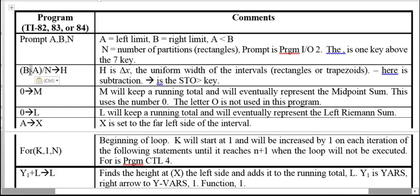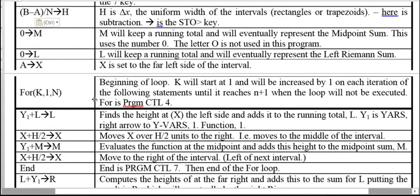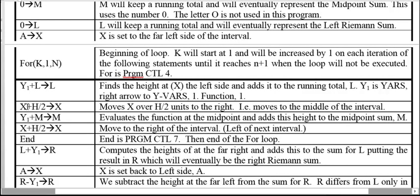We store zero in M and L to start, then store A into X so X is at the far left of the interval. We run a FOR loop — found by hitting PROGRAM then CONTROL 4 — that executes statements for k = 1 through k = N. The variable k is our counting variable telling us which rectangle or sub-interval we're on.